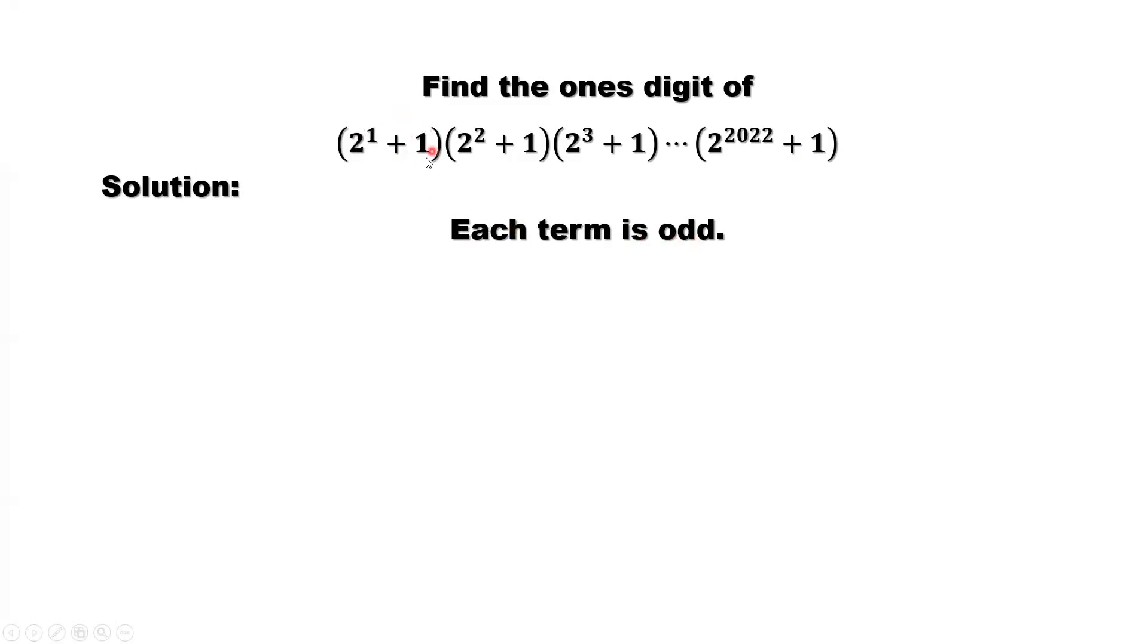In each bracket, the first part is 2 to the power 1 or 2 or 2022. The first part should be an even number.